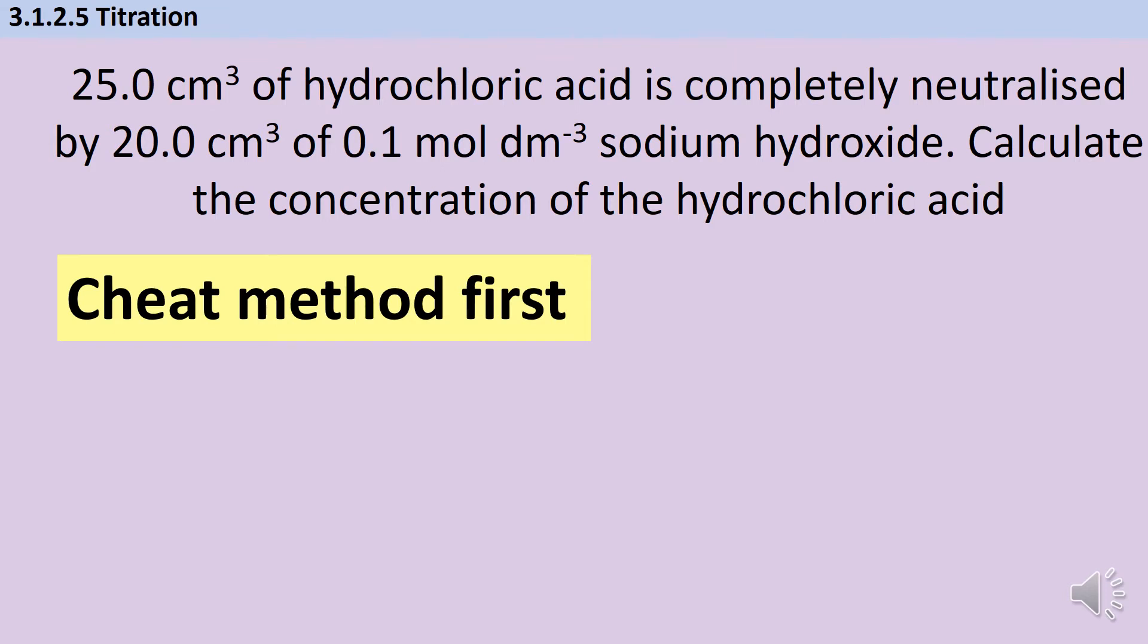So here we've got a situation where we have 25 cm³ of hydrochloric acid that's in our conical flask, and it's been completely neutralized by 20 cm³ of 0.1 molar sodium hydroxide from the burette. We need to calculate the concentration of the hydrochloric acid. So as with all titrations, we've started out and we have a definite known volume of something in a conical flask and a known concentration of something in a burette. By using the titration, we now also have a known volume of that sodium hydroxide.